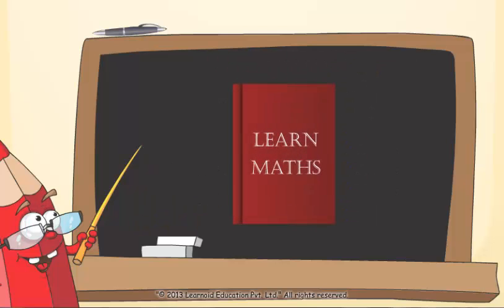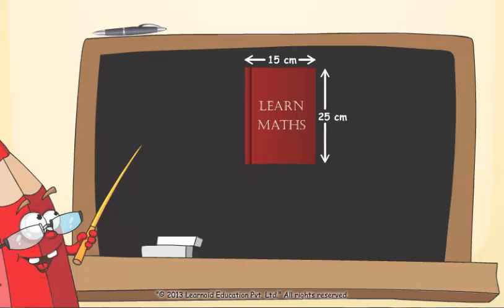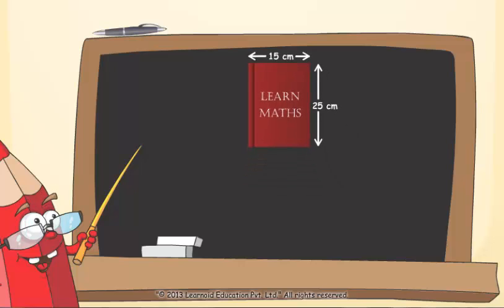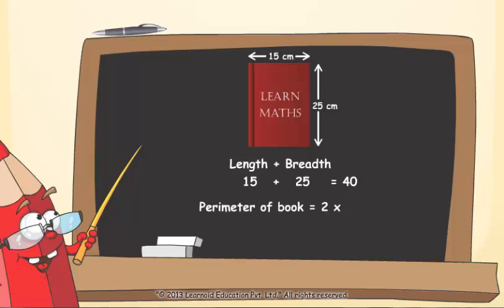Let's take an example of a book. Length is 25 cm and breadth is 15 cm. To find perimeter of book, we will first add length and breadth. 15 plus 25 is equal to 40. Now, perimeter is equal to two times of 40, that is 80 cm.